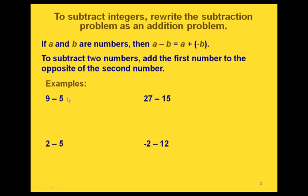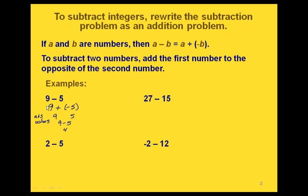Here are some examples. The first step is to rewrite the subtraction as an addition problem. So instead of 9 minus 5, we write 9 plus the opposite of 5, which is negative 5. Now we have an addition problem with two different signs. The absolute values are 9 and 5; the larger is 9. So we take 9 minus 5, which gives us 4, and since the larger absolute value was positive, the answer is positive 4.